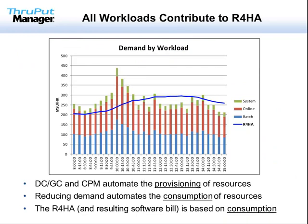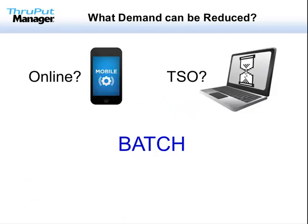This chart shows the same data as before, but includes consumption broken down by workload. Note that the rolling four-hour average is a single value shown with the blue line — it does not discern which applications contributed. An MSU is an MSU. So if we can reduce the demand of any of these workloads, we will reduce our rolling four-hour average and the resulting software bill. If my teenage niece doesn't get her Facebook updates in seconds, the world as she knows it comes to a bitter end — a bit of a joke, but not far from reality in the data center. We simply cannot delay mobile or online transactions. If you don't serve your customers, someone else will.